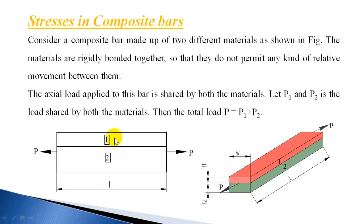Let us consider a case where both materials are parallely connected and their lengths are equal. Such composite materials exist in real life. For example, a concrete pillar consists of two different materials like concrete and steel bars. Steel rods are inserted inside the concrete pillar, and they are rigidly bonded, resisting the compressive load exerted on the pillar.